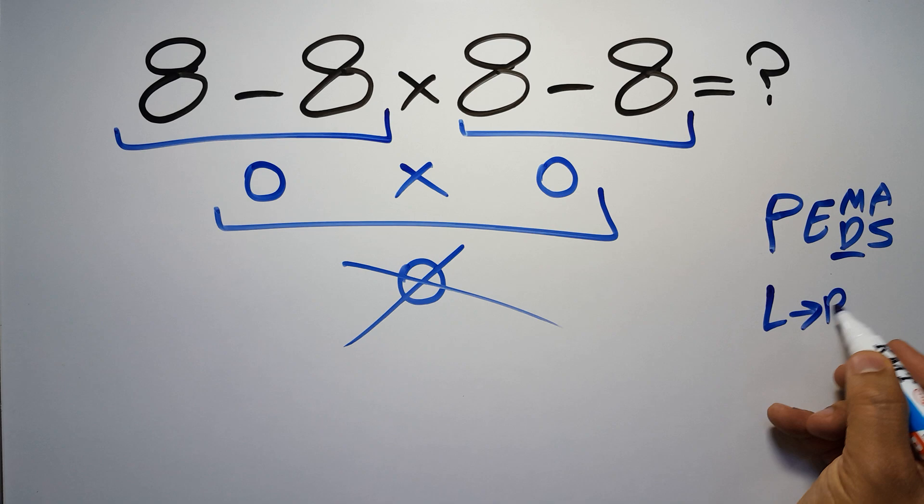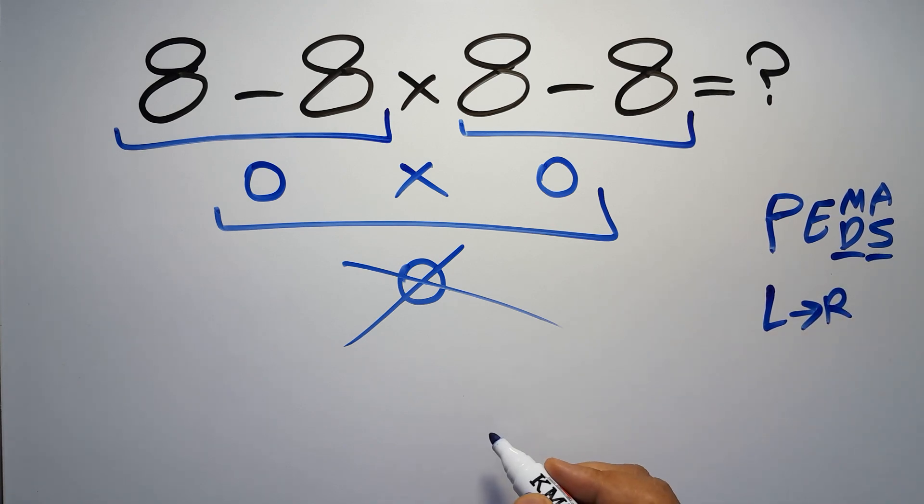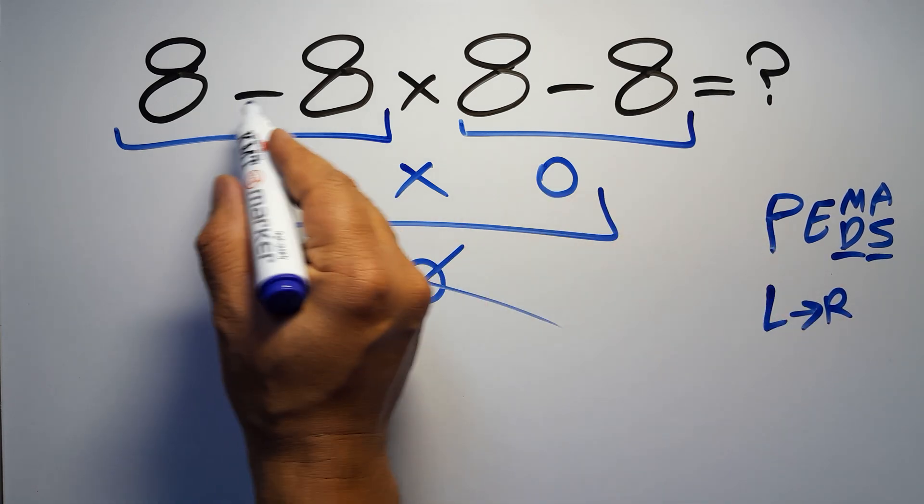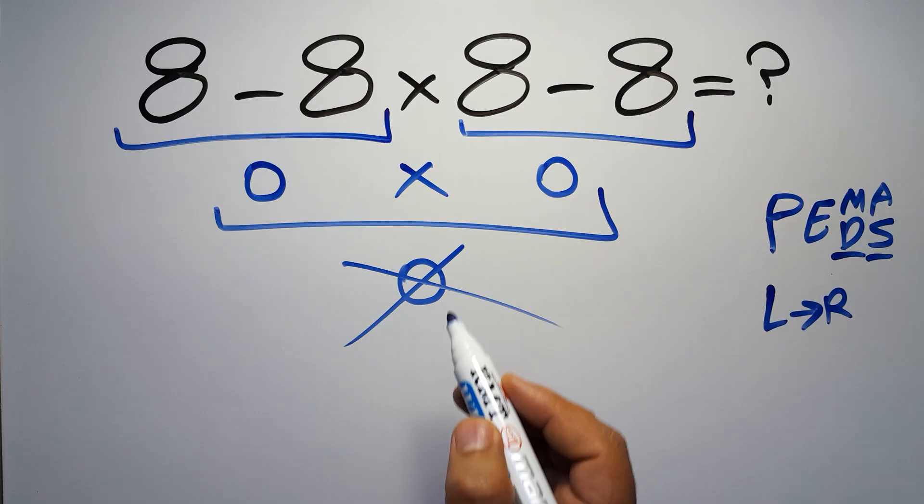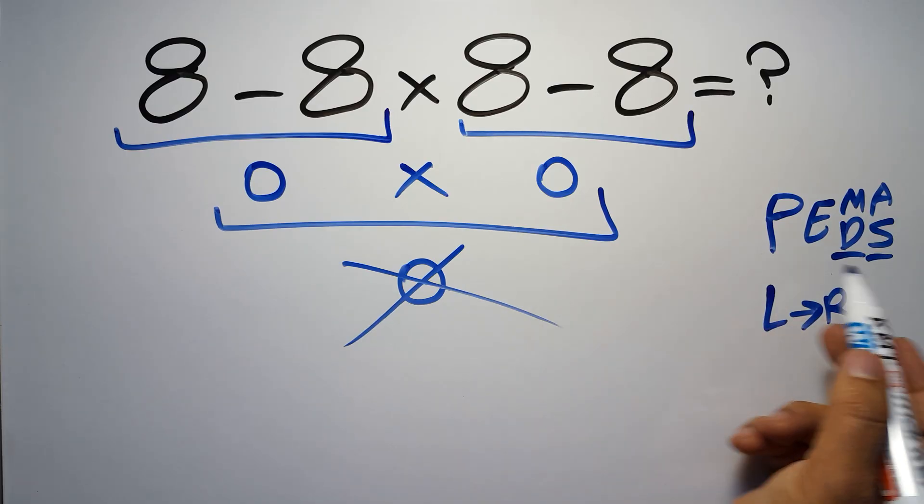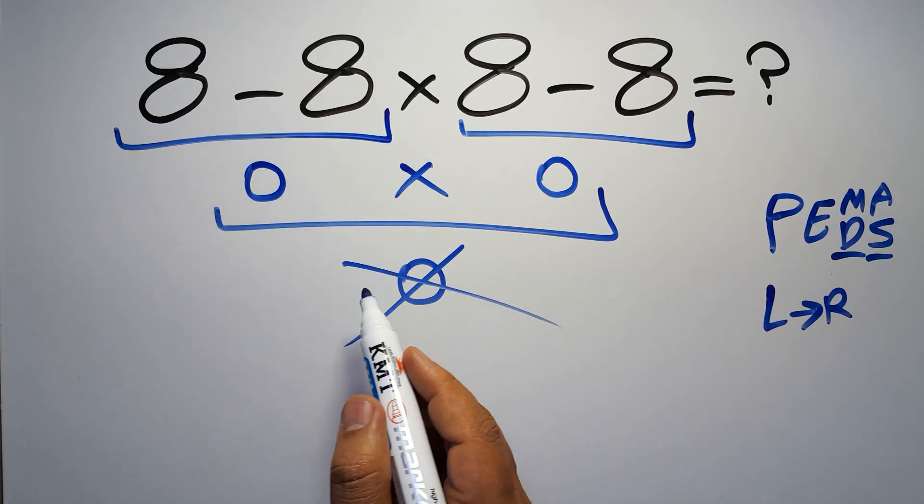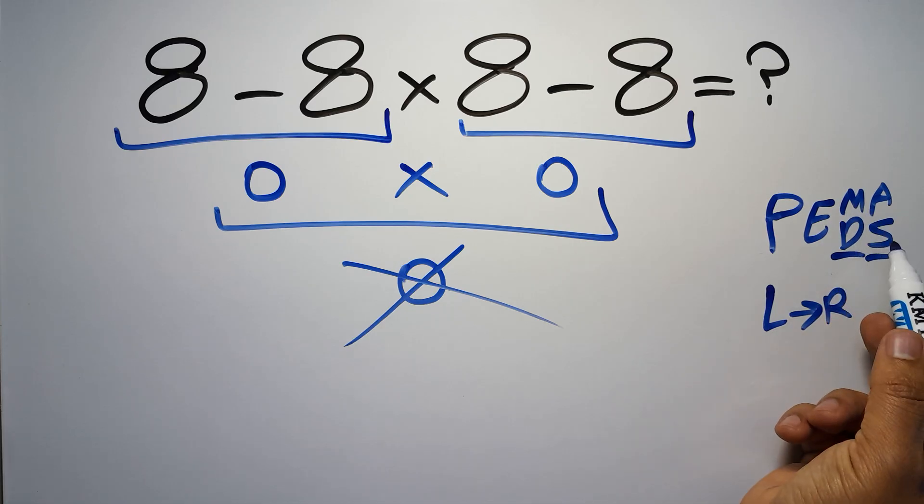Remember that multiplication and division have equal priority and we have to work from left to right. The same applies to addition and subtraction. In this expression we have two subtractions and one multiplication.